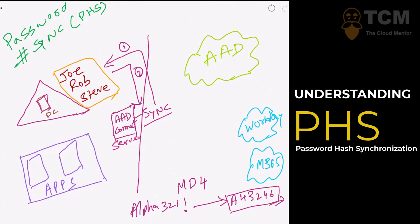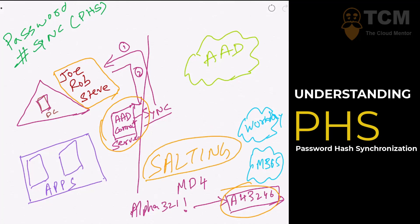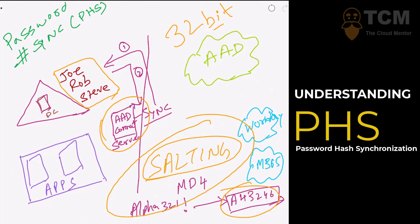Step three: the Azure AD Connect server rehashes the values it received, using a technique called salting. Salting ensures that even if two users have the same password, the output will be different. All of this rehashing and salting results in a 32-bit value that the Azure AD Connect server now needs to send onward.